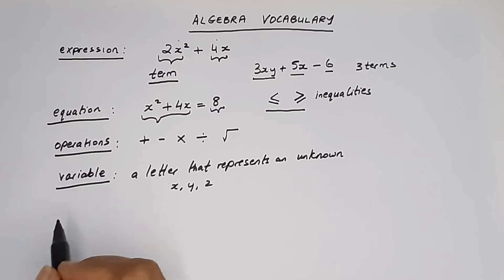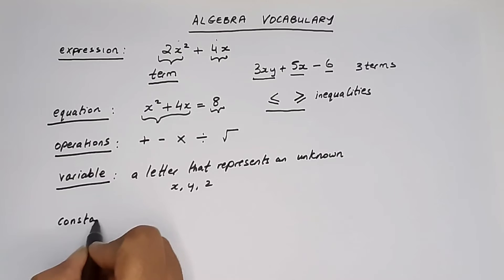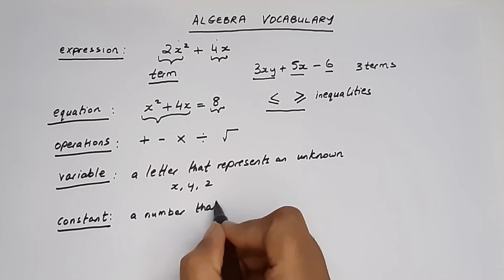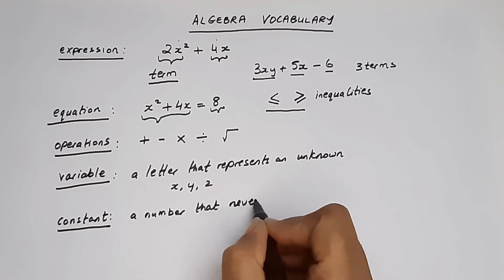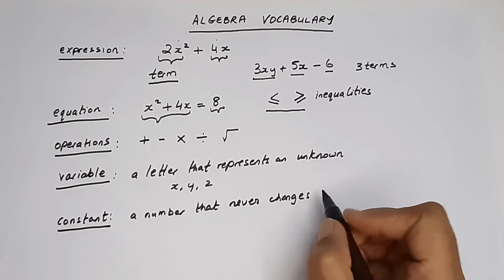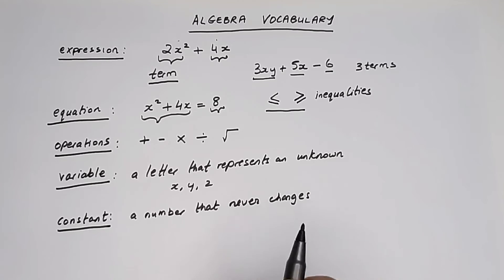Then there's a difference between variables and constants. What is a constant? A constant is a number that never changes. Like the boiling point of water, freezing point of water. Those numbers never change. They are constants. Let's look at an example here.